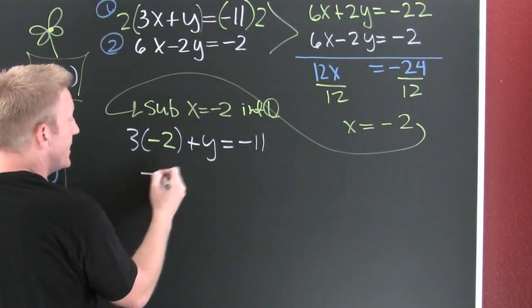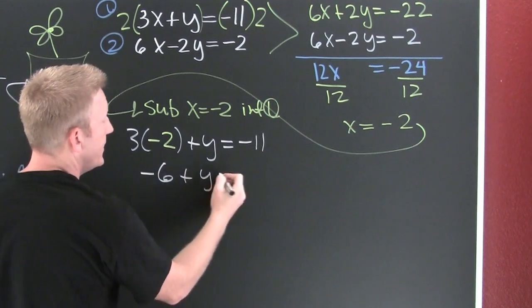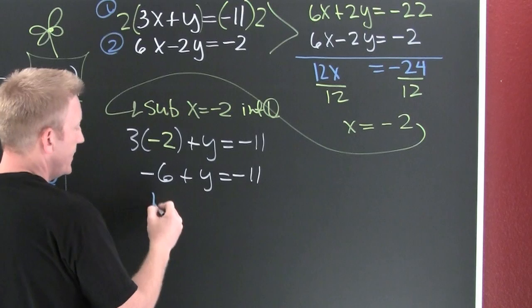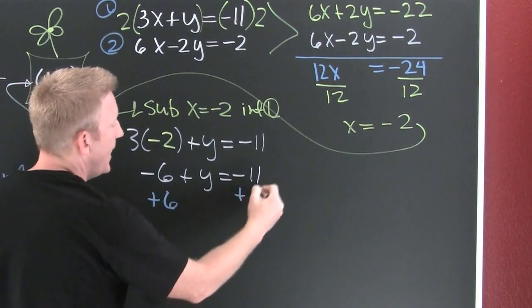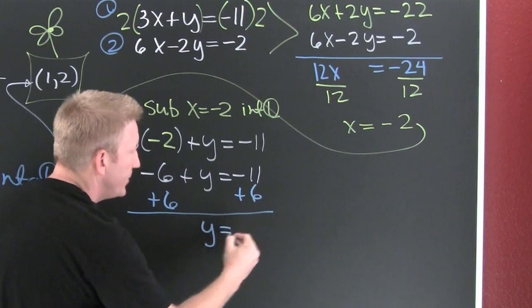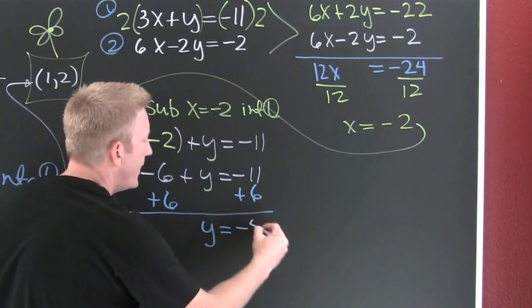Now that's my original. So then I see I got a minus 6 plus y is a minus 11. So then I'm going to add 6 to both sides. Here it is. There's that 6 and there's that 6. I add them and I find that y is going to be a minus 5.